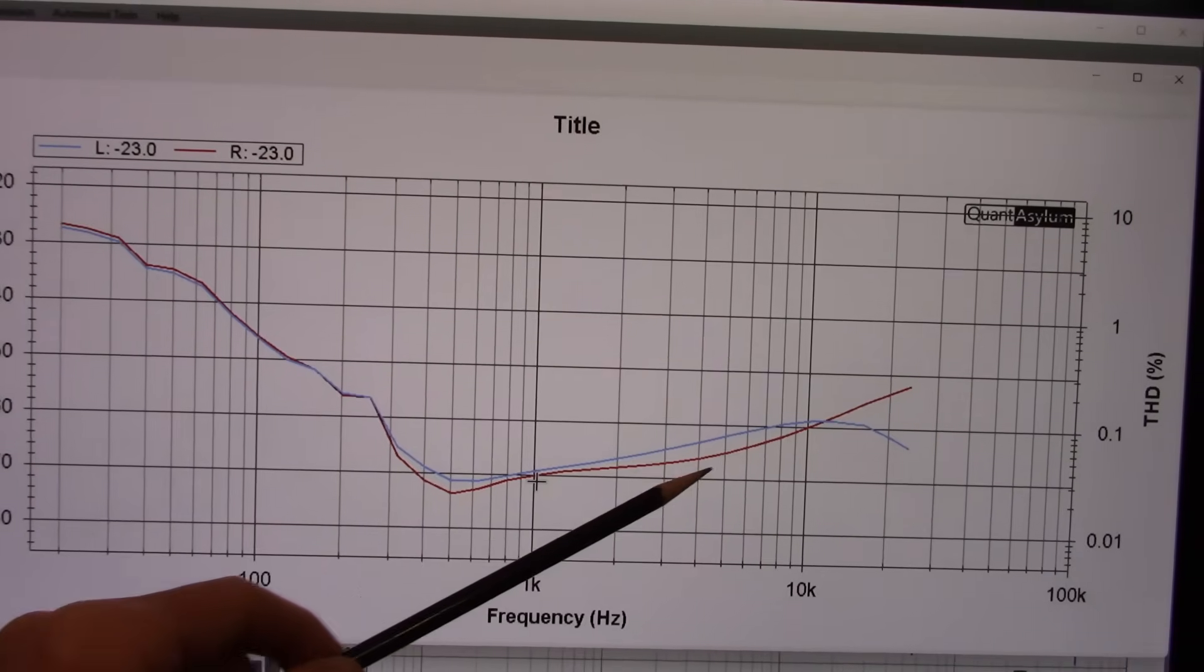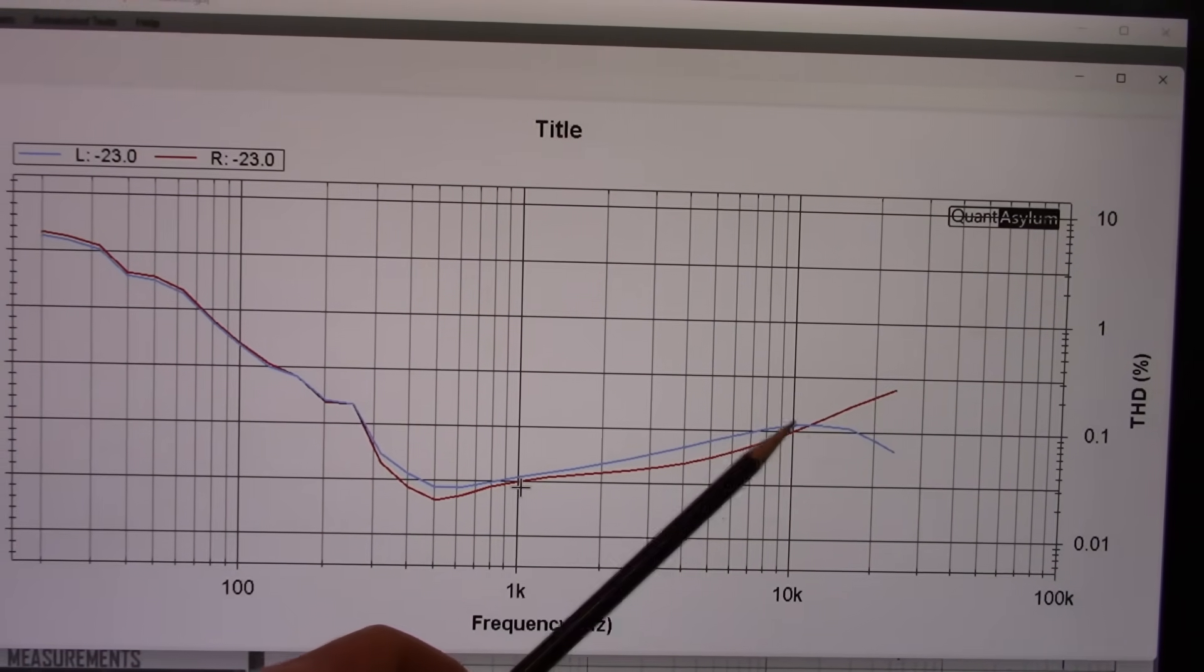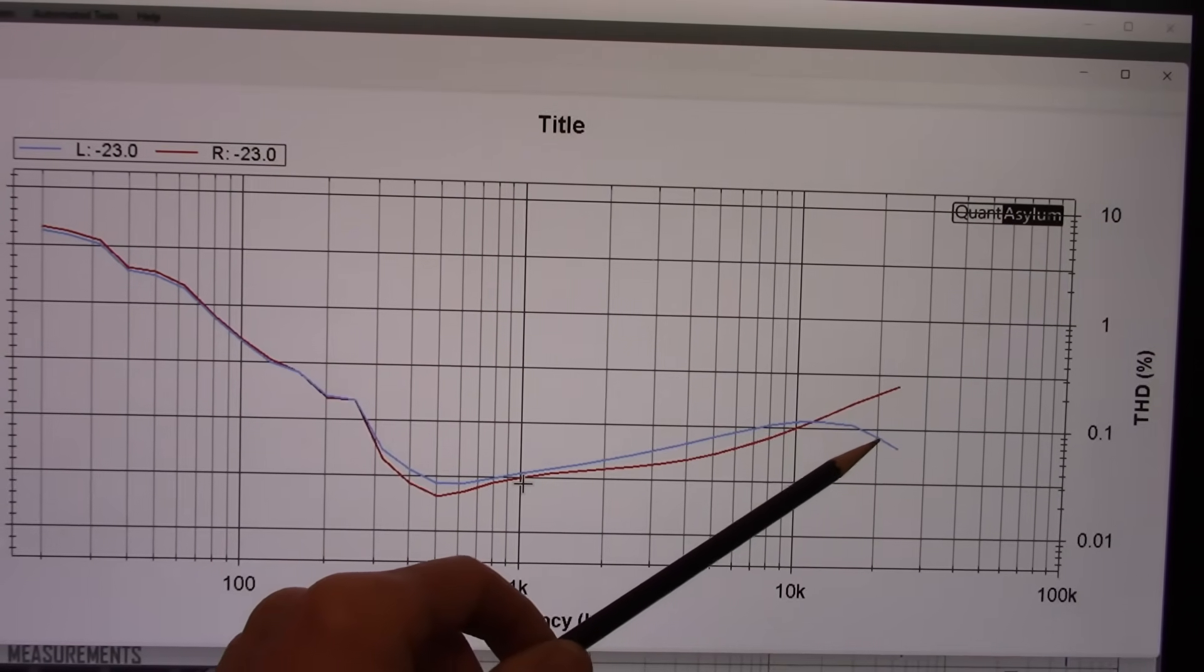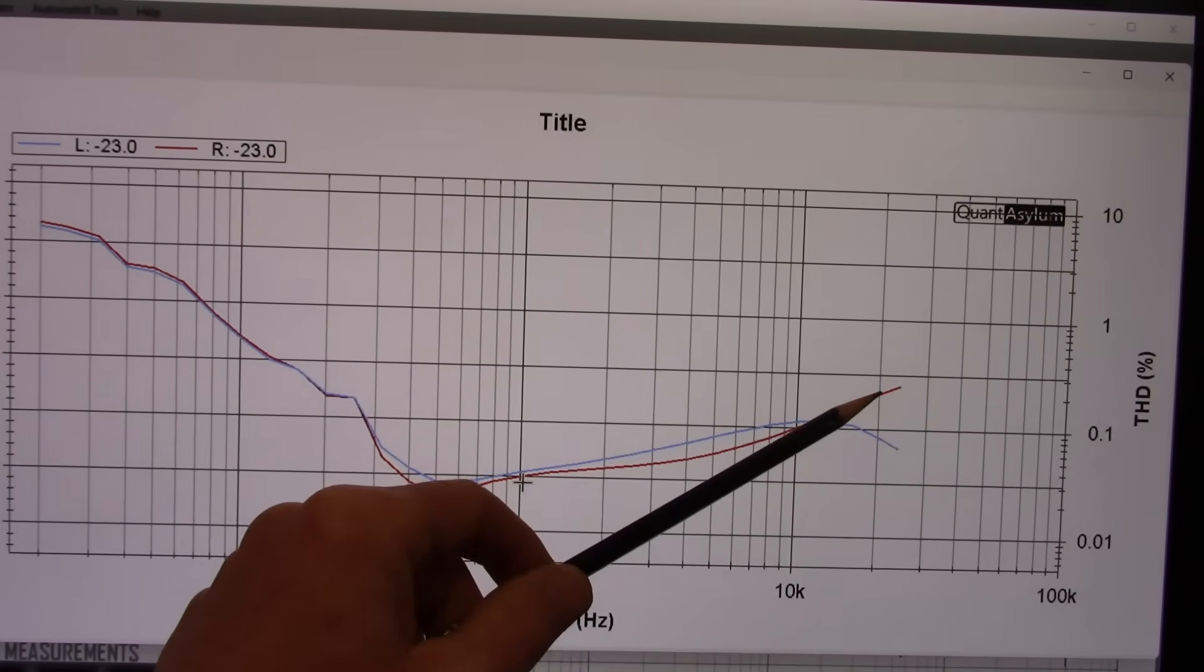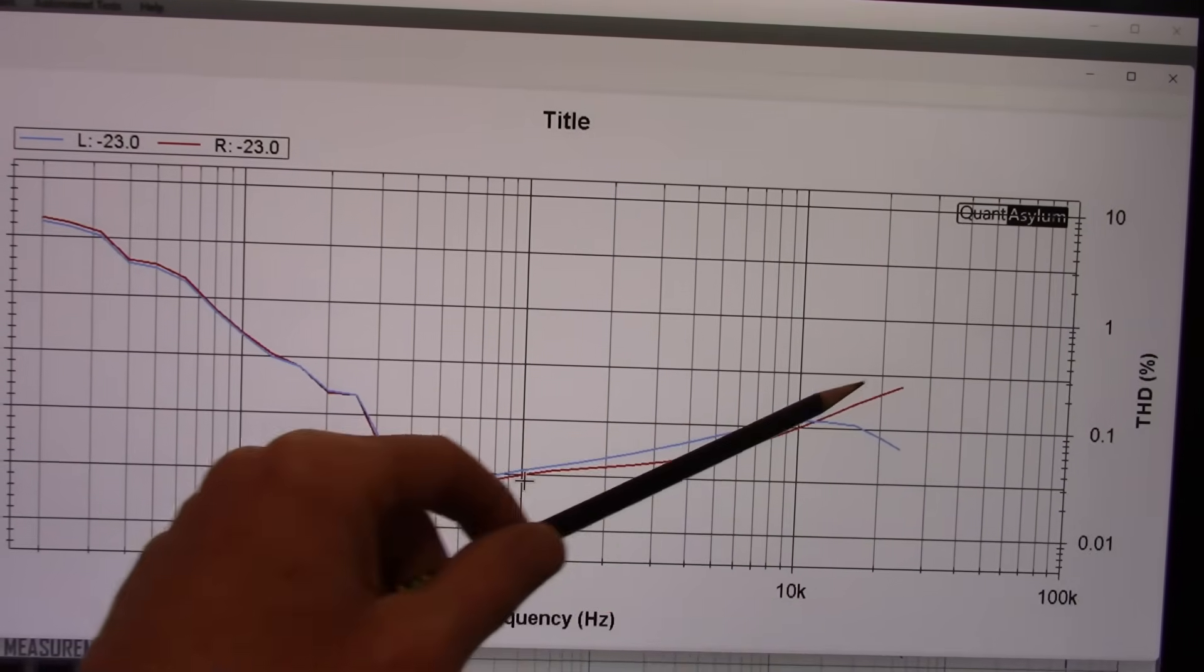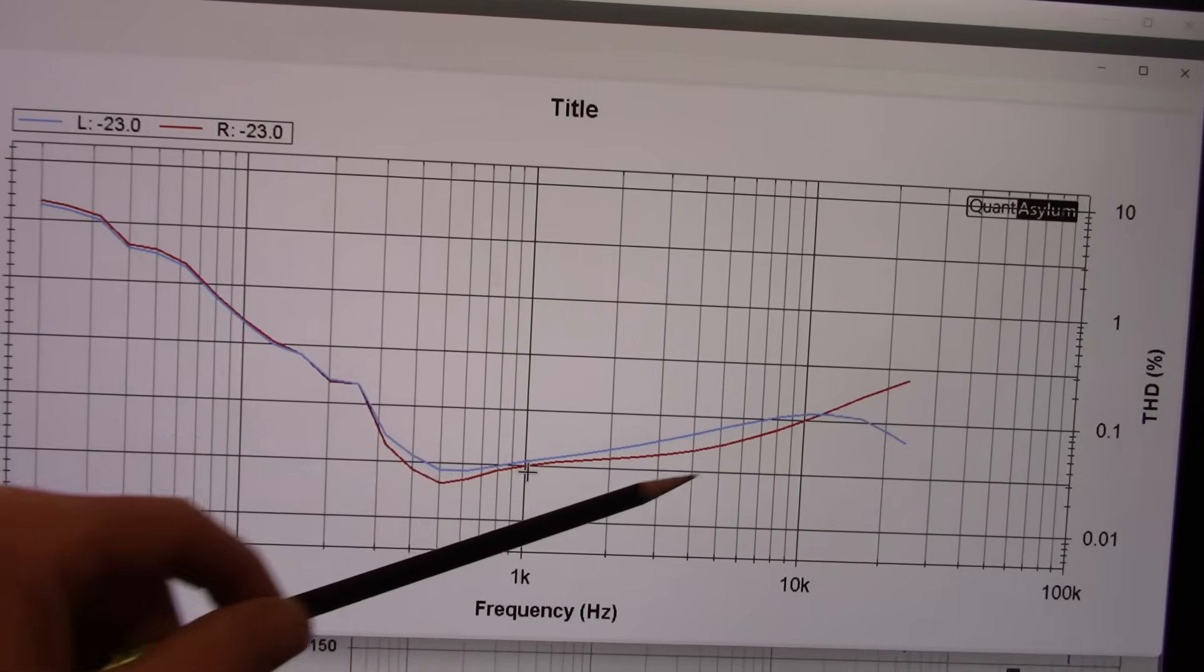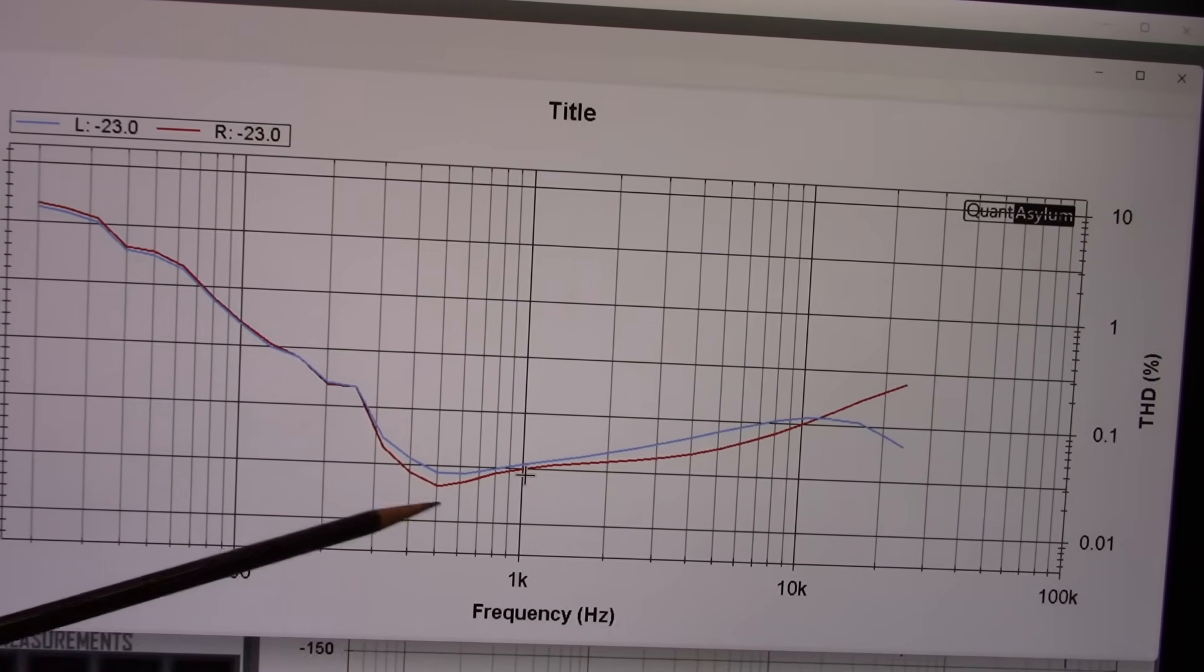And the nice thing, though, is at the high end, it's not going up too much. There is a deviation between channels here. The left channel drops down below 0.1% at 20 kilohertz. Where the other one is around 0.2, a little over 0.2 or so. So I'm not sure what that's about. But that's what we get, and we don't get upset.